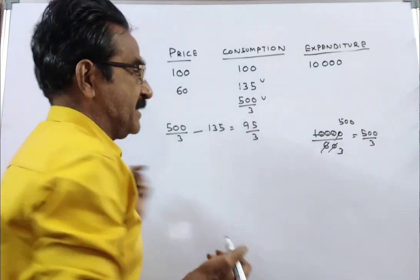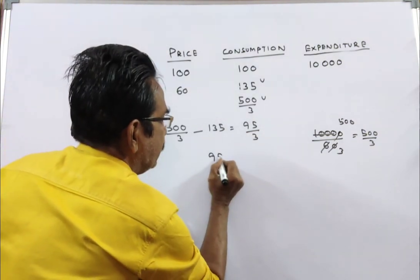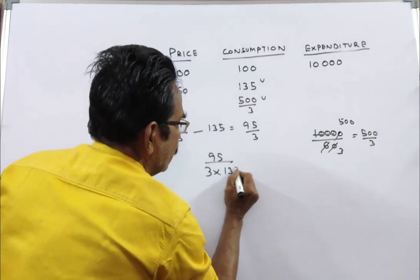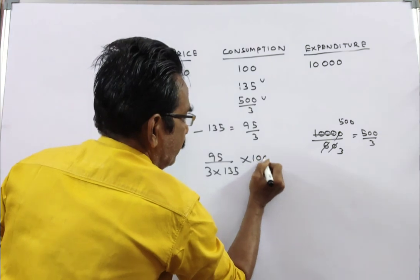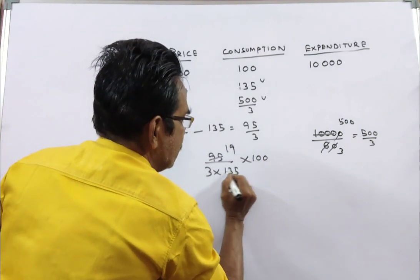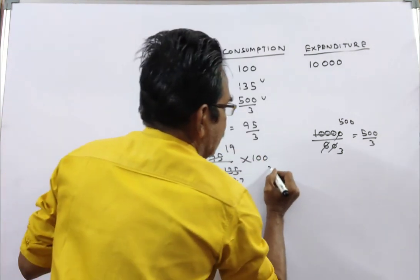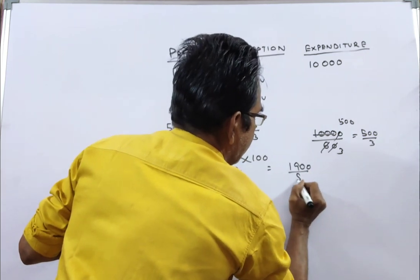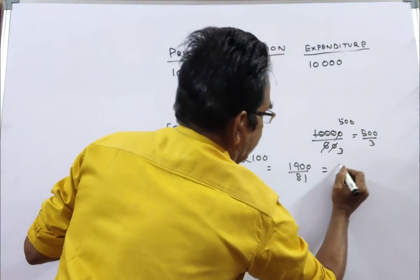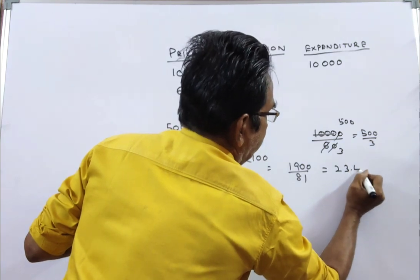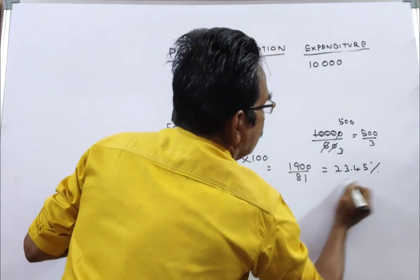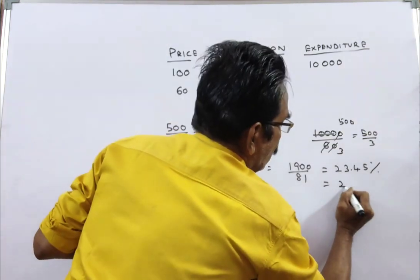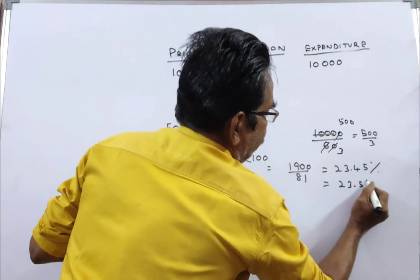So, what is the increase percent? It is 95 by 3 over 135, into 100. If you correct this answer to 1 decimal, it comes to 23.5 percent.